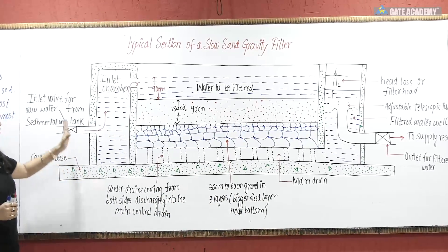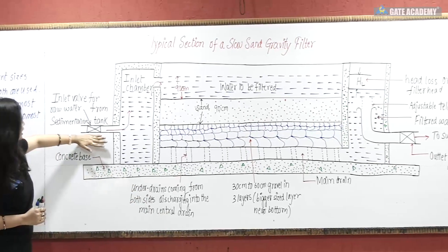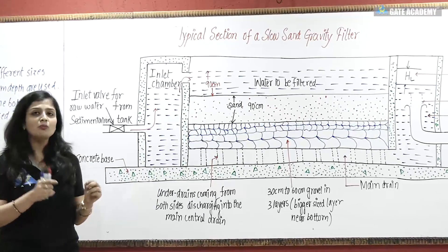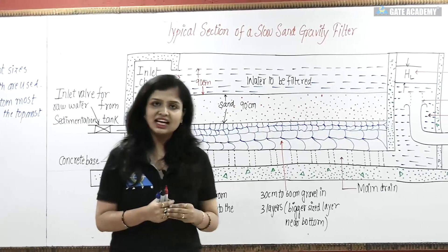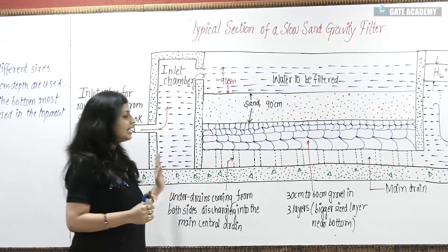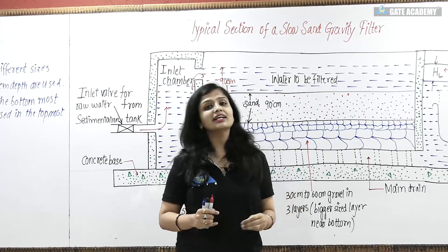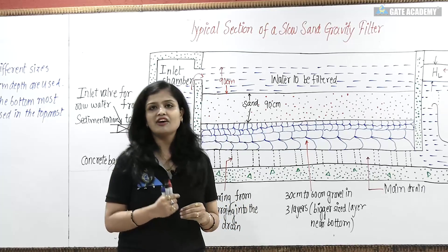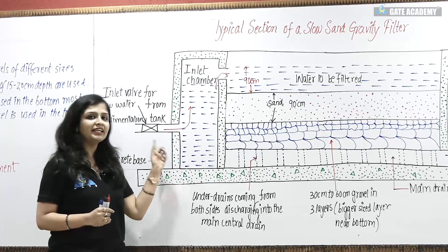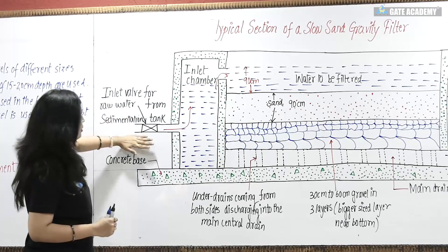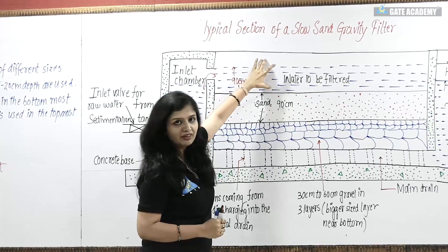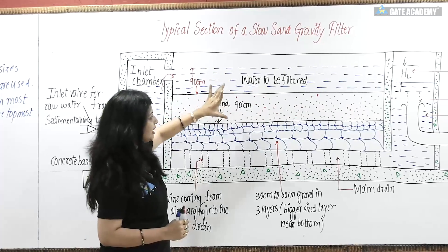Now I will label all the components of the diagram. First, this is inlet water, which comes from the sedimentation tank. For the slow sand gravity filter, we use water from plain sedimentation only — we do not use water treated by sedimentation with coagulation, because sedimentation with coagulation leads to clogging of the filter beds. This is the inlet valve, below our concrete base. This is the inlet chamber. This is the sand layer and this is the gravel layer.